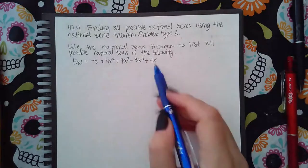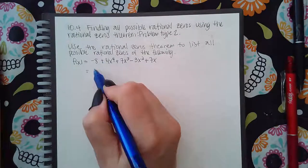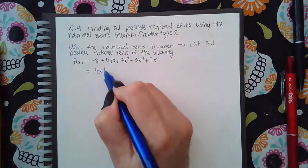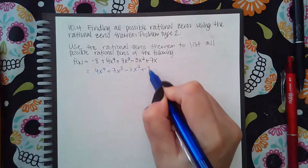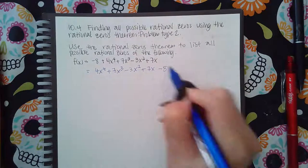We have to make sure that this is in descending order. So we have 4x to the 4th plus 7x to the 3rd minus 3x squared plus 7x and then the constant minus 8.